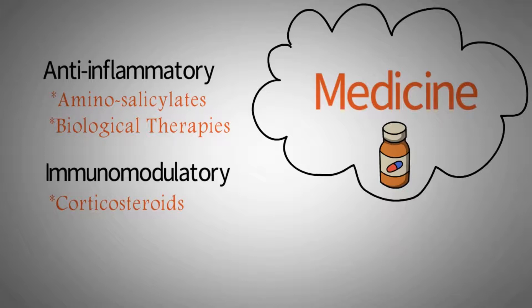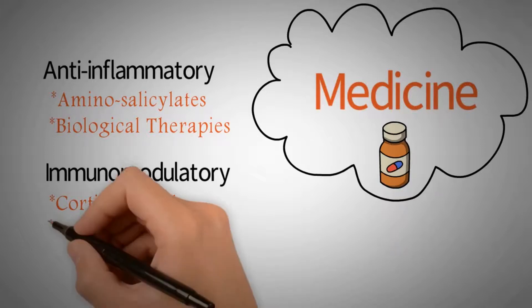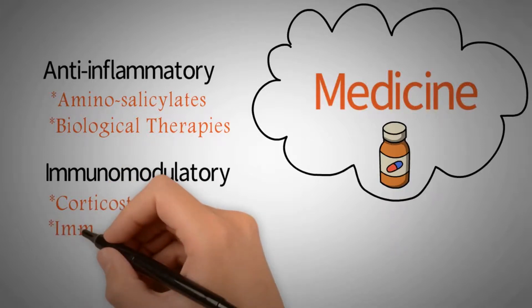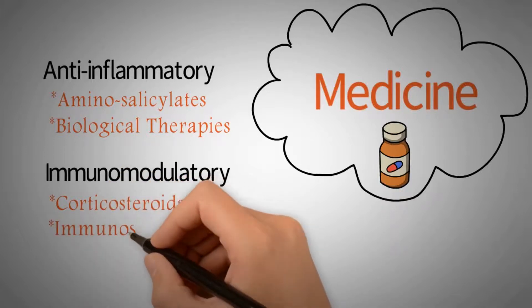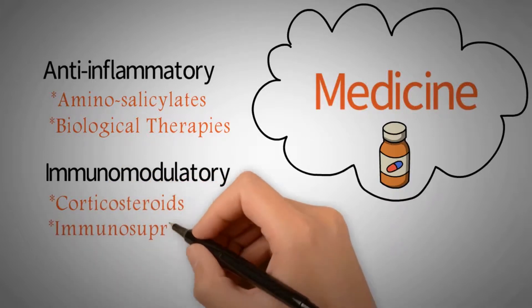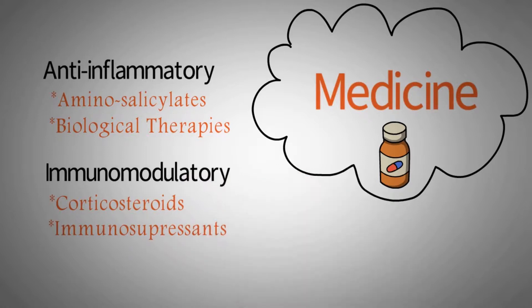If taken for too long, corticosteroids can cause serious side effects, including bone loss. Immunosuppressants can take up to six months to work, but unlike corticosteroids, they can be taken long-term to prevent flare-ups.